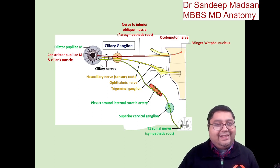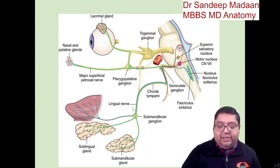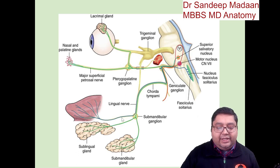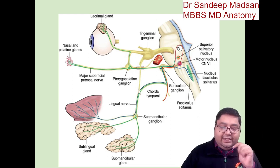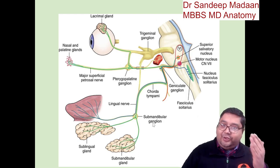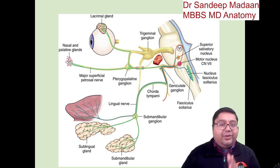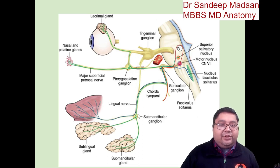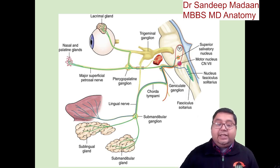Now let us look at the submandibular ganglion. The lingual nerve travels toward the tongue region and on its way holds the submandibular ganglion — making the lingual nerve the topographical nerve. The chorda tympani nerve brings the preganglionic fibers for relay, so it is the functional nerve. After the relay, the postganglionic fibers go to the sublingual gland and the submandibular gland.